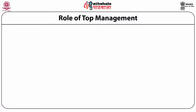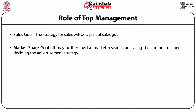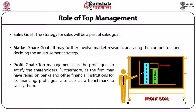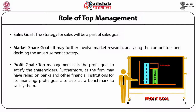The third goal is sales goals, where the strategy for sales forms part of sales goals. The fourth is market share goal, which may involve market research, analyzing competitors, and deciding the advertisement strategy. Fifth is the profit goal, where top management sets the profit goal to satisfy the shareholders. Furthermore, as the firm may have relied on banks and other financial institutions for financing, profit goals also act as a benchmark to satisfy them.